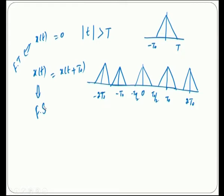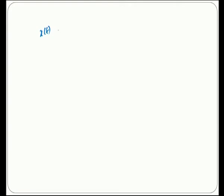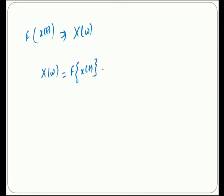The Fourier transform of the continuous signal X of t: after taking the Fourier transform of X of t, you get the output X of omega, which is the frequency response. X of omega is defined as the Fourier transform of X of t, given by the integral from minus infinity to plus infinity of X of t multiplied by e to the power of minus j omega t, times dt. This is the formula to find the Fourier transform.